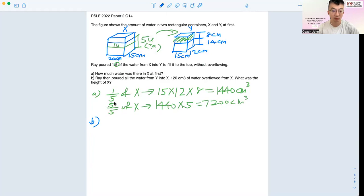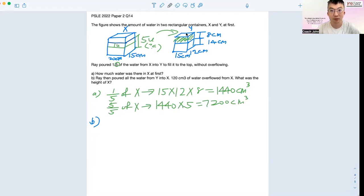Ray then pours all the water from Y into X again, with a bit of water left, and 120 cubic cm overflowed. Which means that you have to minus away 120 from the water here. The whole of Y is actually 15 times 12 times 22 - because here is 22, and you got to take the whole of Y, like the bandong. Then we have 3960 cubic cm.